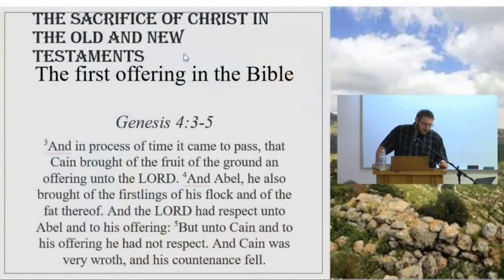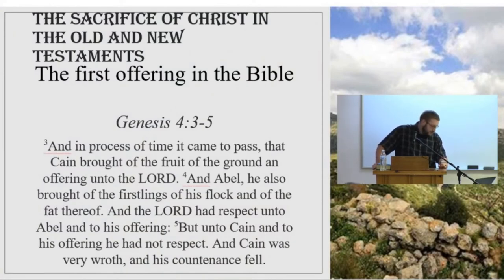The first offering in the Scriptures is Cain and Abel — not very long after our last example. They give us, from the very beginning, a picture of what is a right and wrong offering. Genesis chapter 4, verses 3 and 5 in particular. Eve bore these two children, Cain was a tiller of the ground, and Abel was a keeper of the sheep.